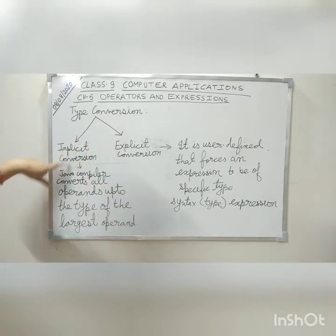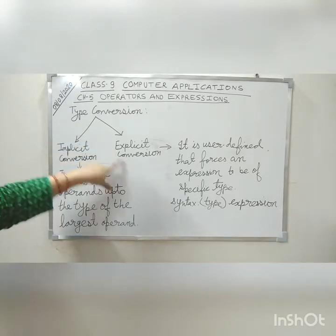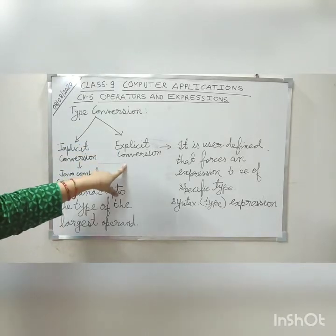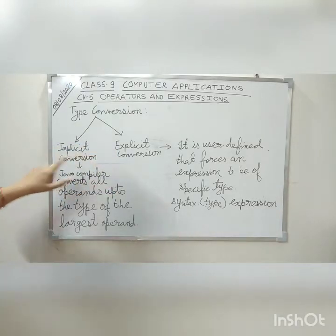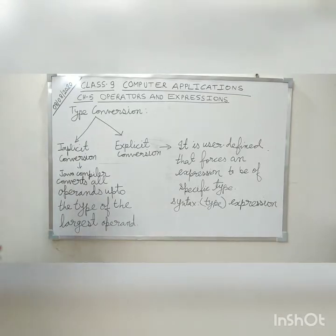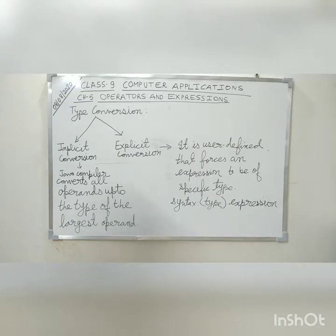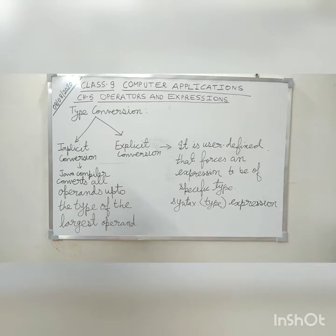What is implicit type conversion? This type of conversion is done by the Java compiler. In this type of conversion, there is no role of the user or the programmer. It is automatically done by the Java compiler.